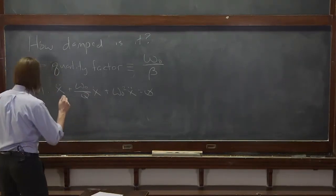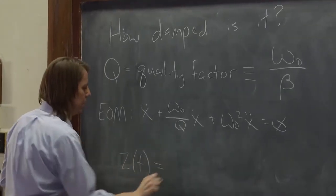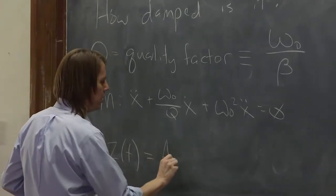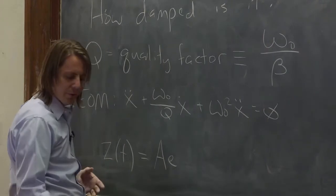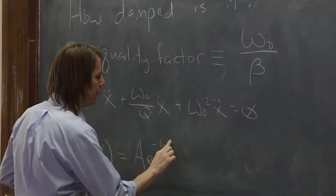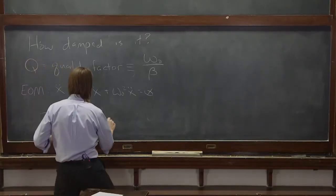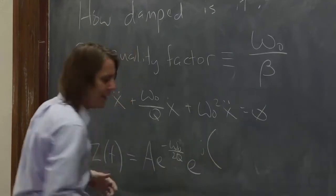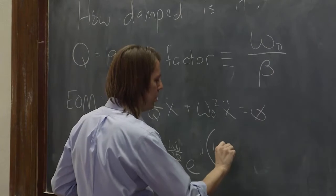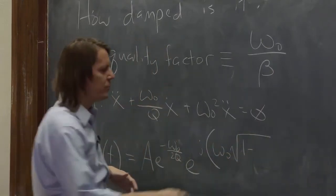And then we could also take our solution, our Z of T, our complex solution, and rewrite it with Qs rather than betas. And we would get A e to the, well first is the decaying part, e to the minus omega naught over 2Q, and then the oscillating part e to the j, and then omega naught times the square root of 1 minus 1 over 4Q squared.